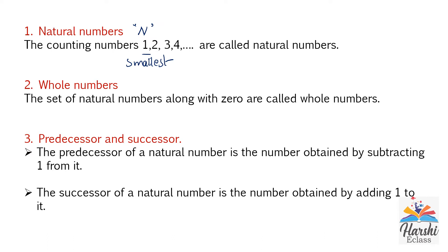Whole numbers: the set of natural numbers along with zero are called whole numbers. Natural numbers are 1, 2, 3, 4, 5 — they are infinite. Including zero, the natural numbers along with zero are called whole numbers. Whole numbers are represented by the symbol W.